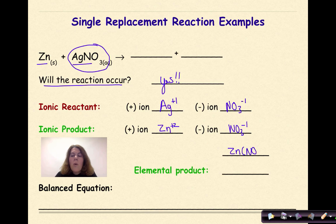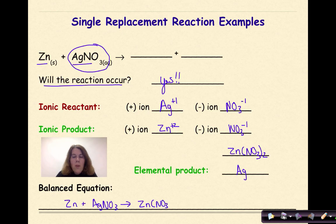So if we write that as a formula we will get Zn NO3 2 and then our elemental product is the silver by itself which can be represented as Ag. So our final reaction will be Zn plus Ag yields Zn NO3 2 plus Ag.